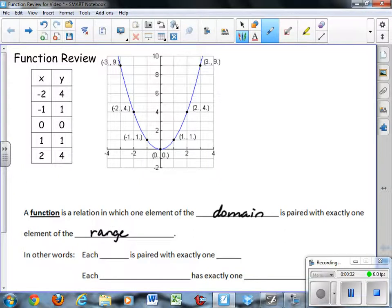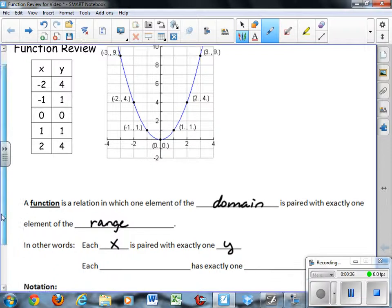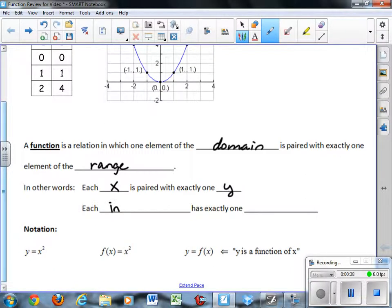In other words, each x is paired with exactly one y, or each input is paired with exactly one output. You put something into the function, you get a unique element out.